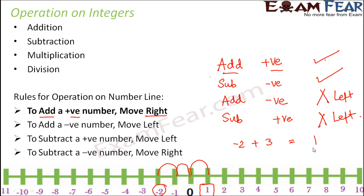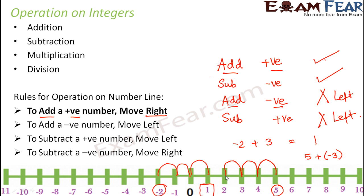Now let us say you have the integer 5, and we are trying to add minus 3 to it. We are adding a negative number, so we move towards the left. From 5, move 3 steps to the left: 1, 2, 3 — you have reached 2. So 5 plus minus 3 equals 2. In this way, we can perform addition or subtraction on integers.